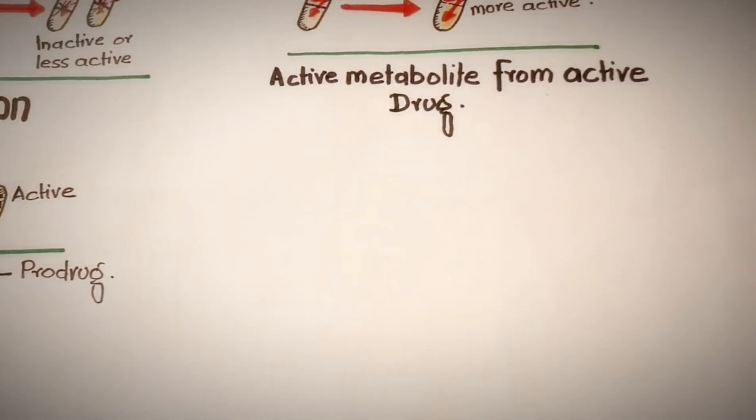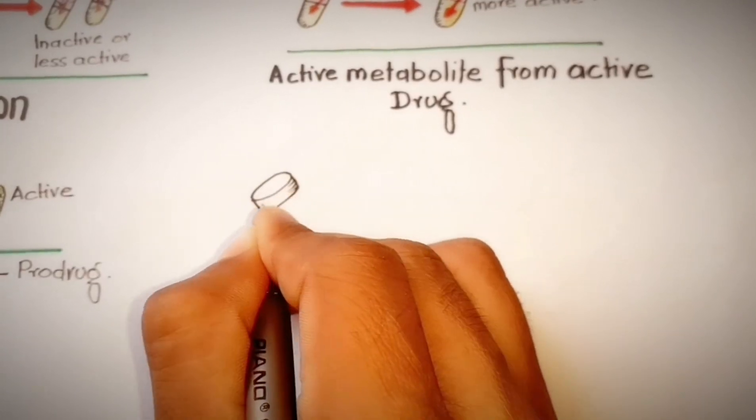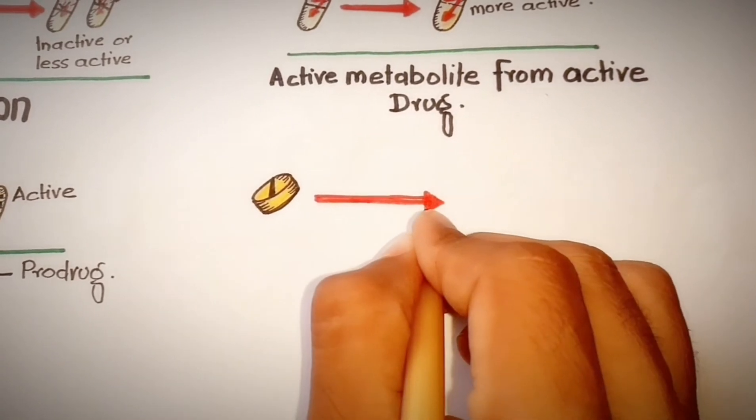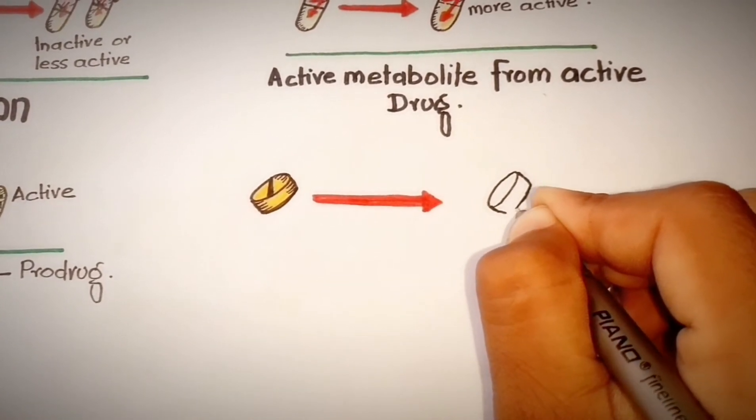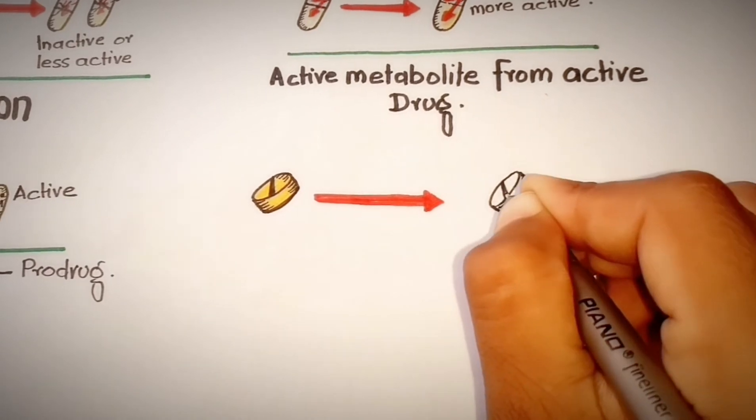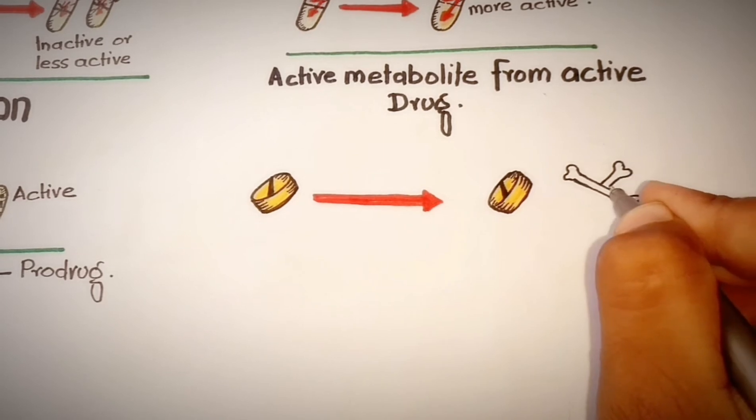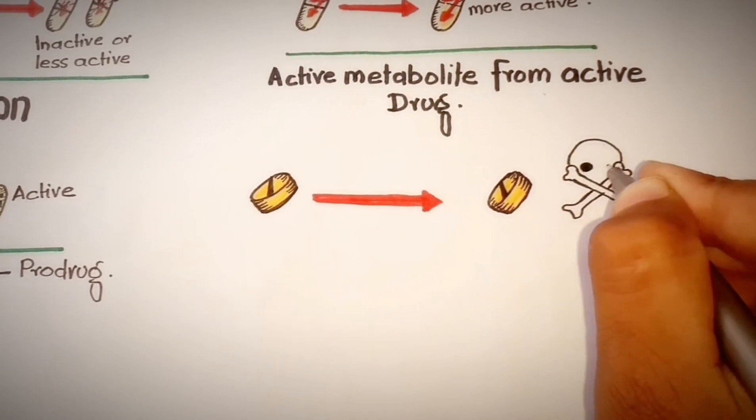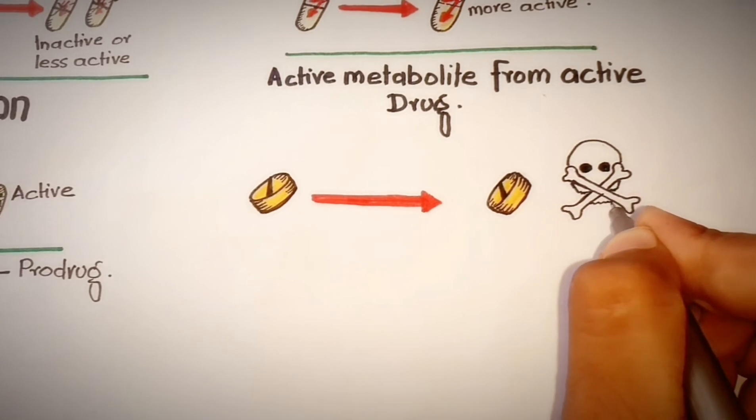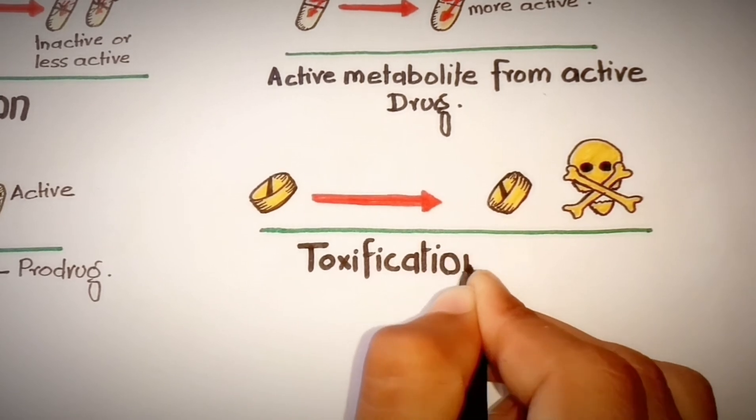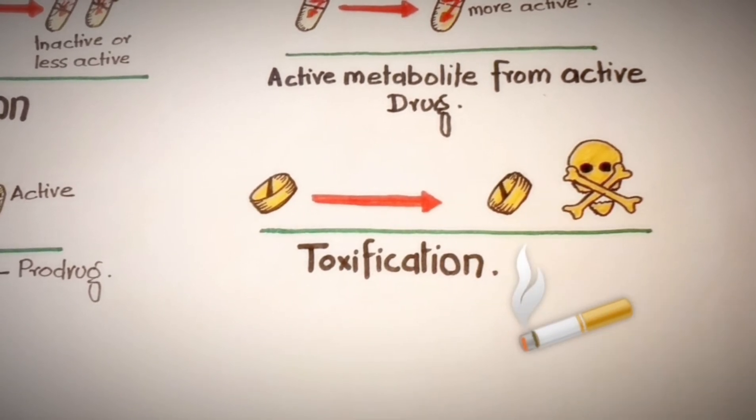The last is metabolism may lead to toxification. Certain chemicals lead to highly reactive, toxic, and carcinogenic metabolites. This occurs when an unstable intermediate is formed that has reactivity towards other compounds found in the cell, for example chemicals in tobacco smoke. For this purpose drugs are extensively tested during developmental stages to avoid toxification in humans.